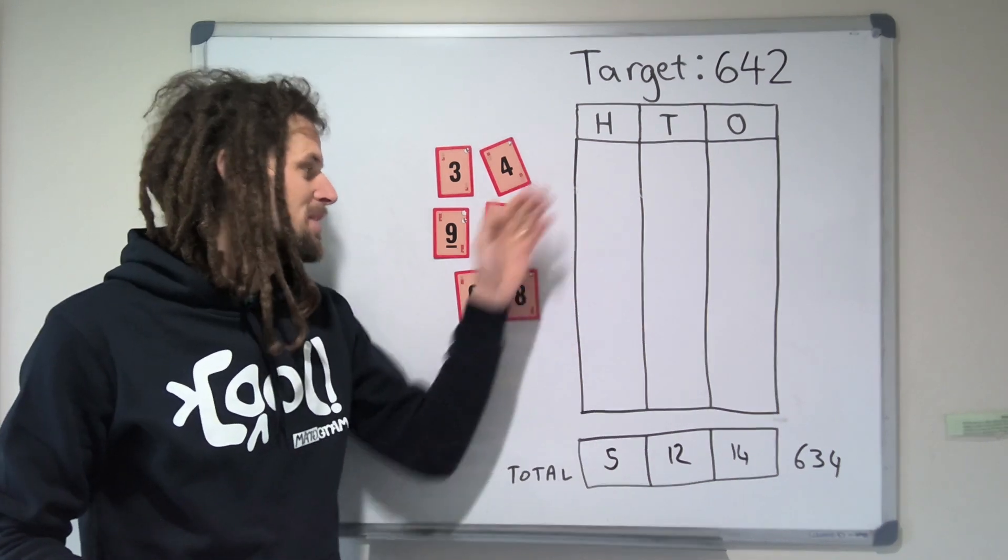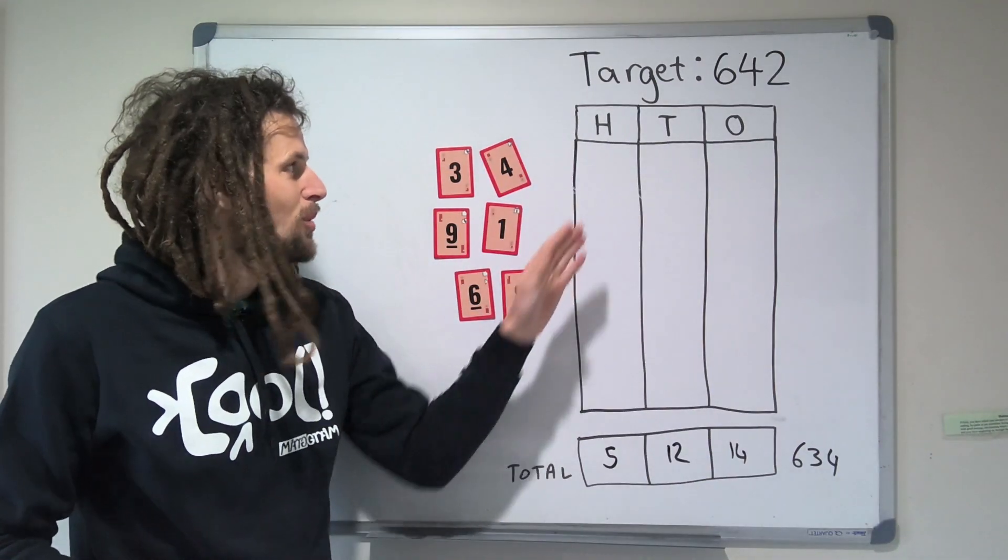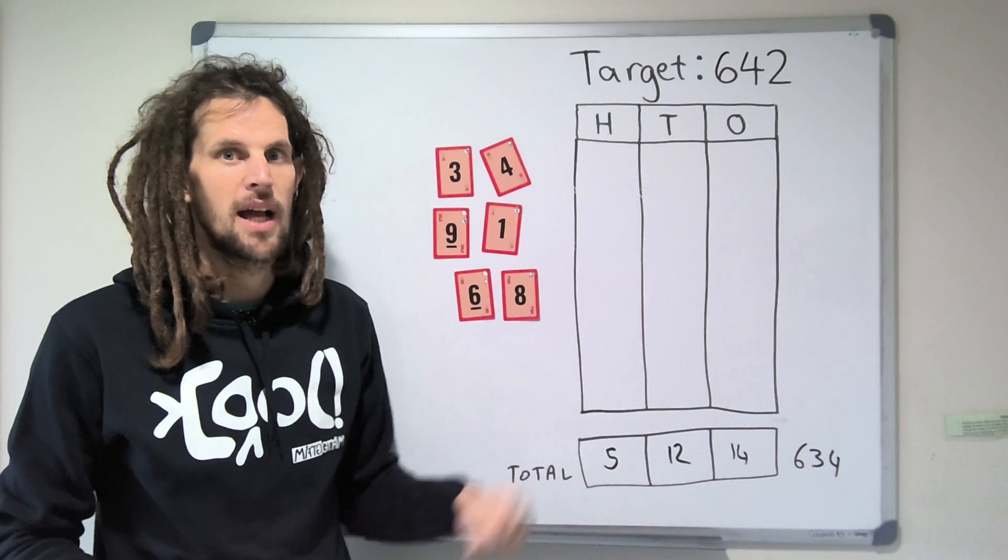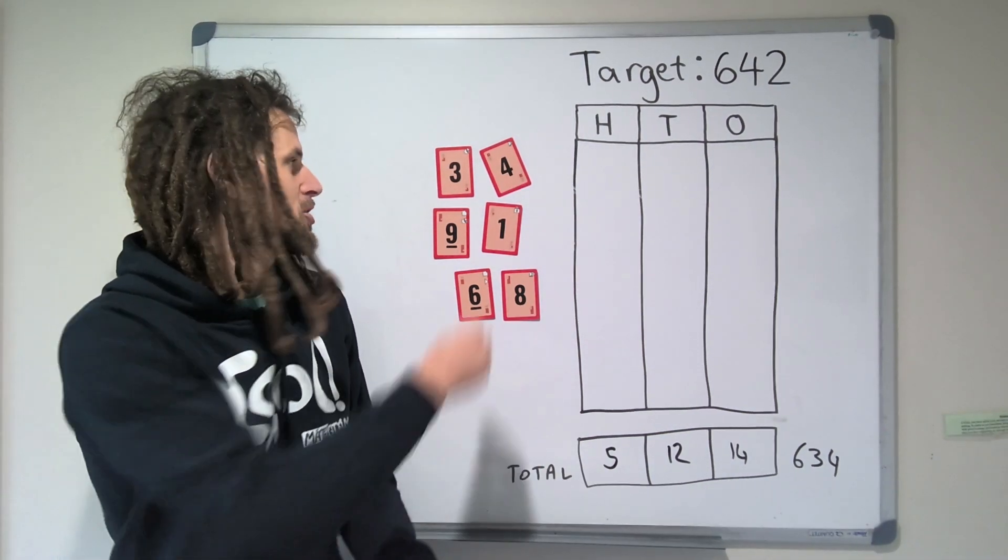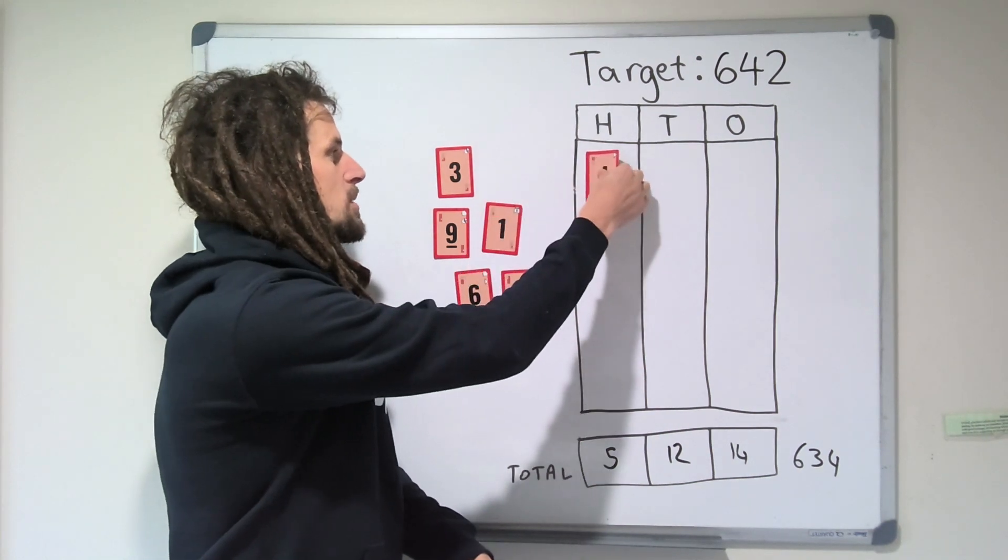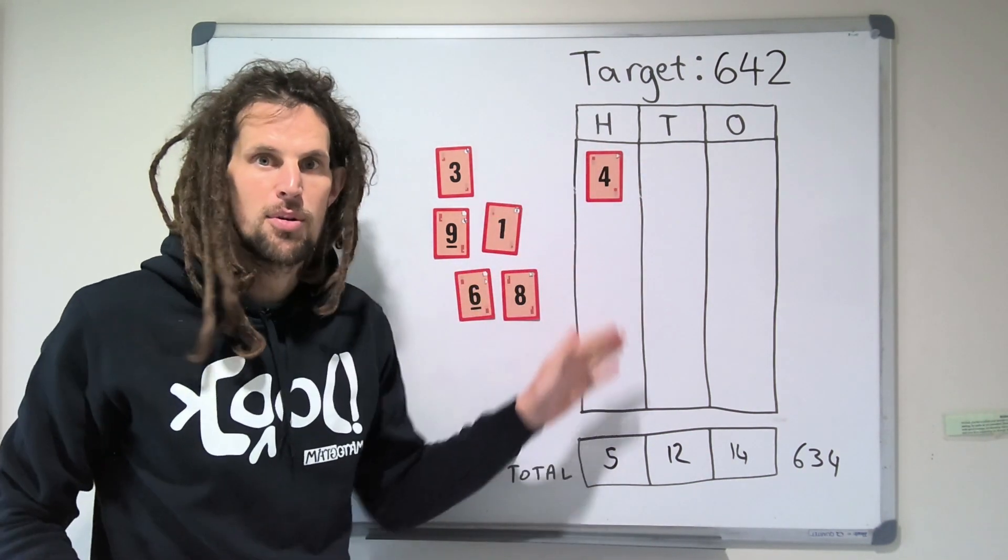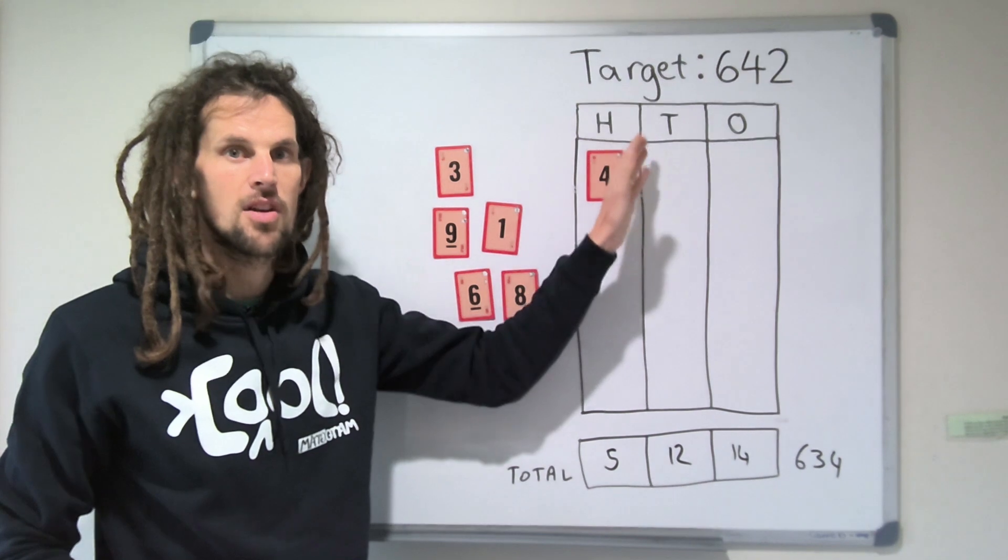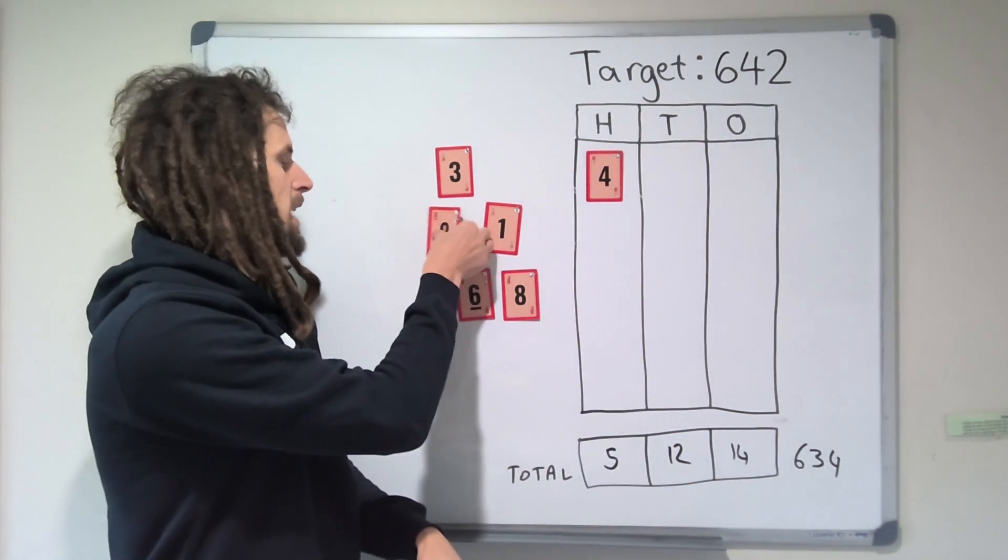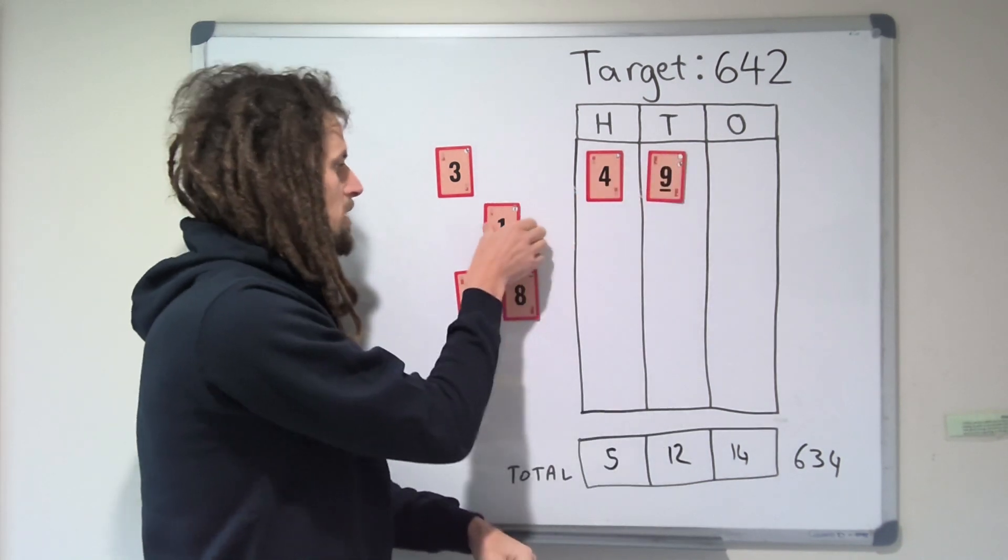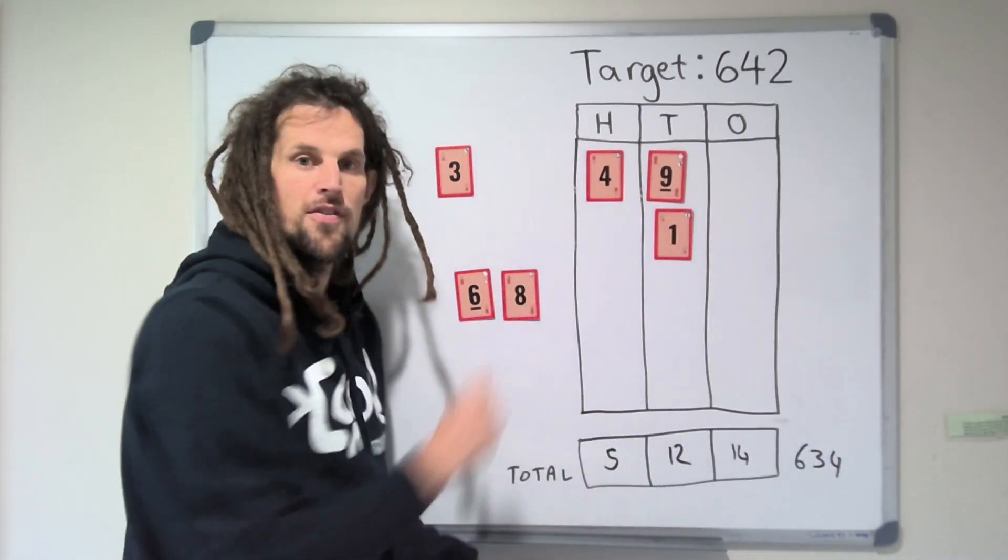Now you may have been experimenting with the 6 in the hundreds column. Once you do that, you've only got 42 to play with here, and it might not give you the flexibility you need. So eventually you might try just say the 4 in the hundreds column. So that means we need to put some pretty big numbers here in the tens column to make up the 200 that we need to get 600. So we might just whack a few in here, if we put the 9 and 1 in there, we're on 500 now.